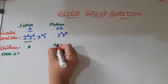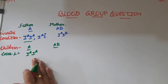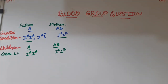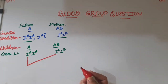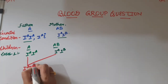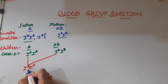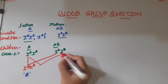In Case 1: father has blood group A with homozygous condition IᴬIᴬ, and mother has blood group AB with condition IᴬIᴮ. We know that one allele from the father fuses with one allele from the mother. If the first Iᴬ of father fuses with Iᴬ of mother, the combination is IᴬIᴬ, and the blood group of that child is going to be blood group A.